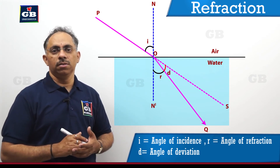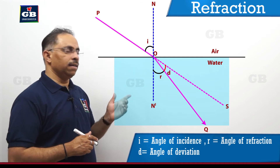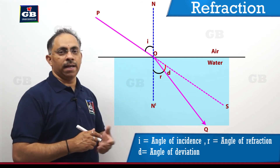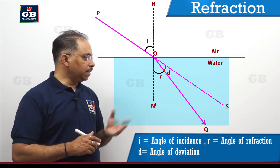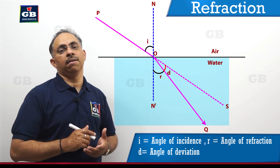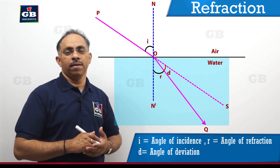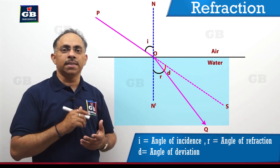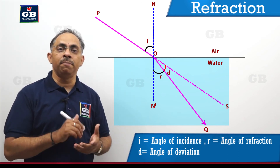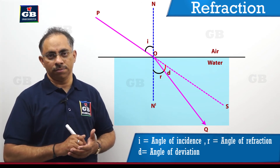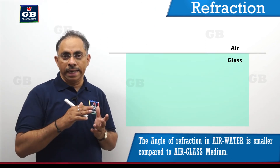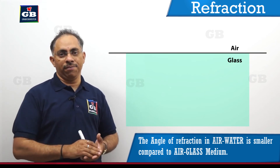For an air-water interface, fixing some angle of incidence and studying how much is the angle of refraction and angle of deviation — will it be the same angle through which the light ray bends irrespective of different media? That is one question. Let us consider one more interface: the air-glass interface, meaning the light ray going from air to glass.